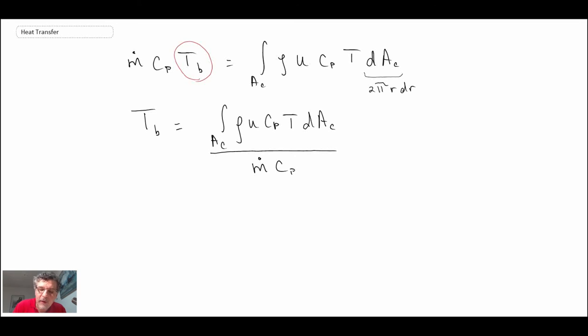So I'm going to equate those two. That's the integral over our pipe, and this dA is going to be 2πr dr. That's what we will be substituting. What I want to do is solve for T_b on the left-hand side, and then the right-hand side becomes the following. What I'm going to do in the denominator is put in a value for m_dot*c_p.